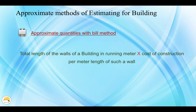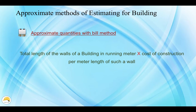The next method is the approximate quantities with bill method. In the case of the building, we have to calculate the total amount of woodwork, floor finishing, roofing, etc. For example, for the foundation, we calculate the same way. This method is a very time-consuming method. We need to write out all the quantities in this method.